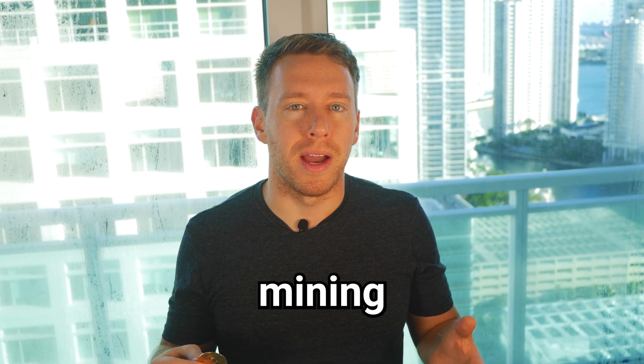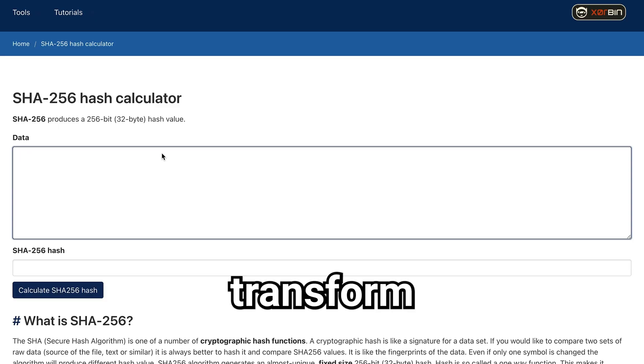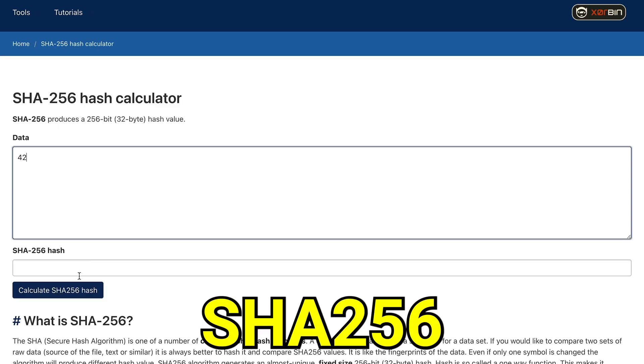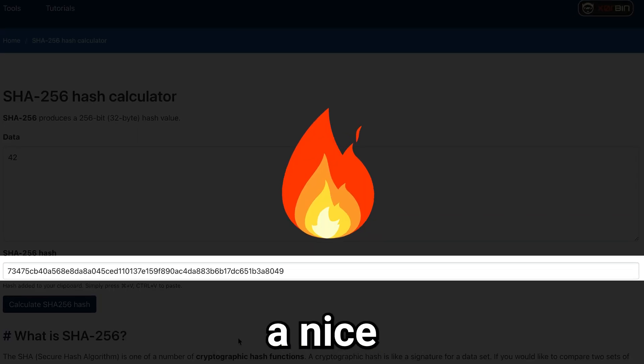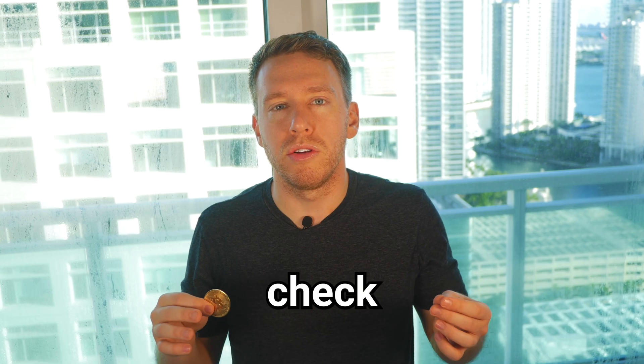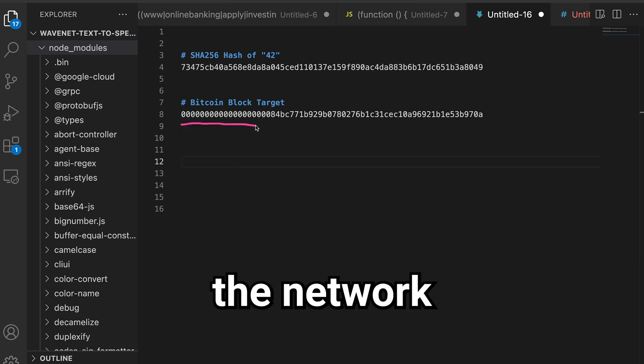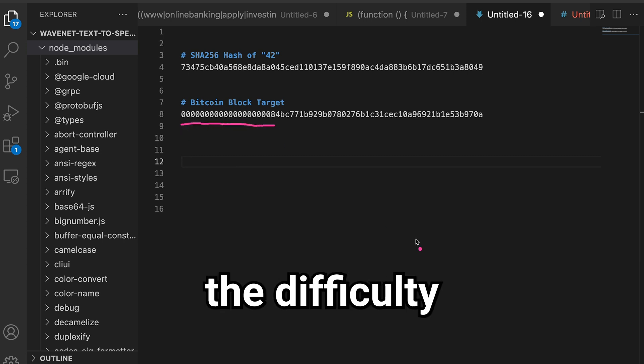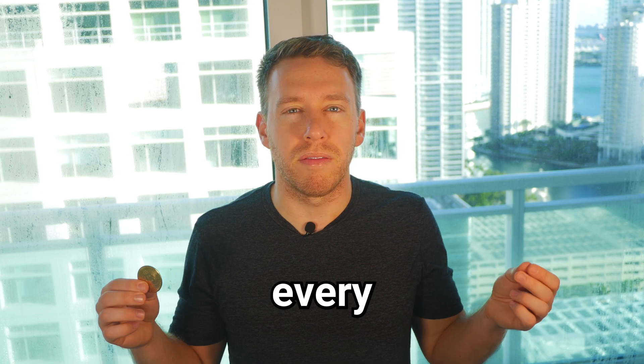For those coming in cold, if you don't know what Bitcoin mining is, basically you take a number and transform it using a function called SHA256, then you check to see if the result falls beneath the target value set by the network. The network modulates the difficulty such that new blocks are written roughly every 10 minutes.